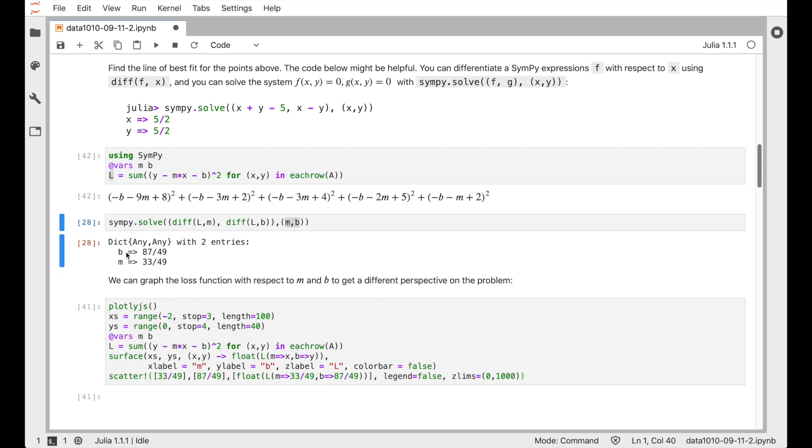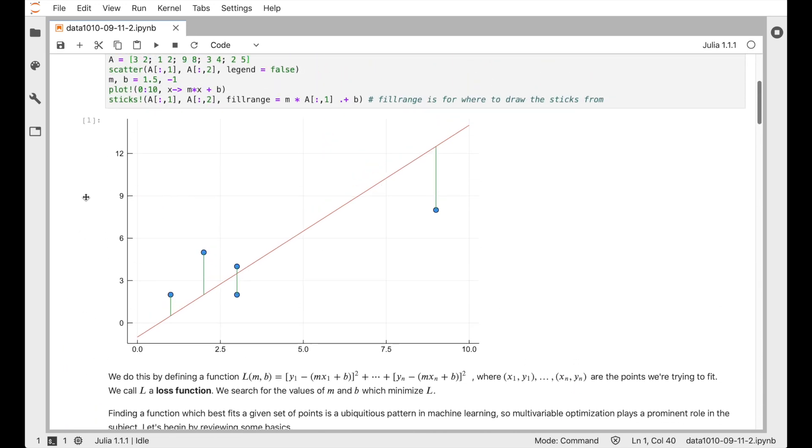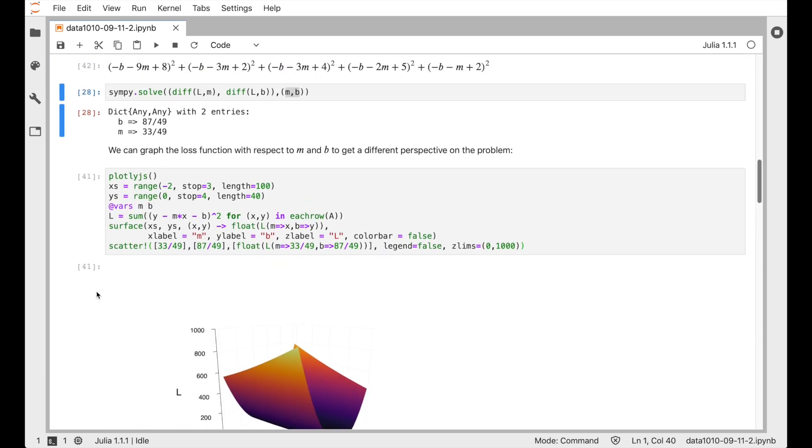And we just run this line of code and we get a dictionary back, which tells us the variable M should be 33 over 49 and the variable B should be 87 over 49 if the point M comma B is a critical point. And since there's only one solution here, we can tell that that's probably going to be the unique minimum. Just from the original problem, it's easy to convince yourself there should be one line that kind of cuts through here and does as well as possible. And if you move away from that line, it gets worse. If you move it up or down or tilt it, it's not going to fit the points as well.